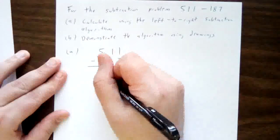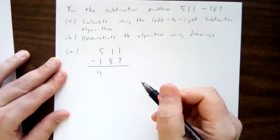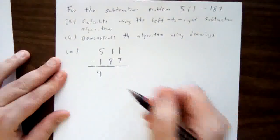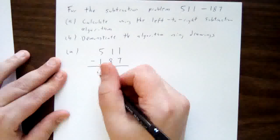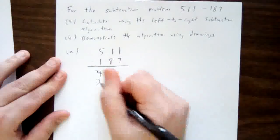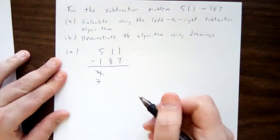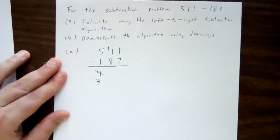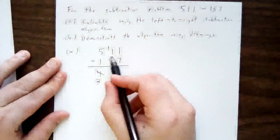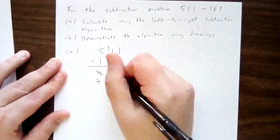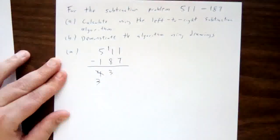5 minus 1 is 4. And when we can't subtract — 1 minus 8, we can't do that — I'll borrow from the difference that we've just found. From the four 100's that are left over, I'll take one of them, leaving three 100's behind, and take that extra 100 and move it into the 10's place, giving me ten extra 10's. I now have 11 10's in total, and I'd like to remove eight of those 10's, and that would leave three 10's behind.